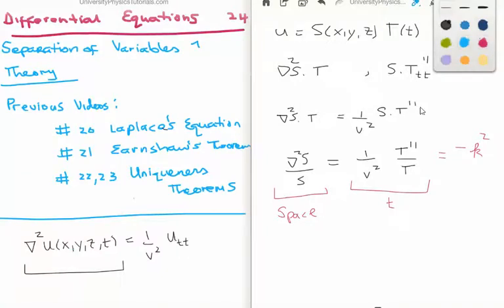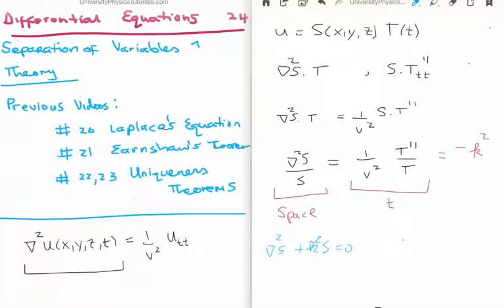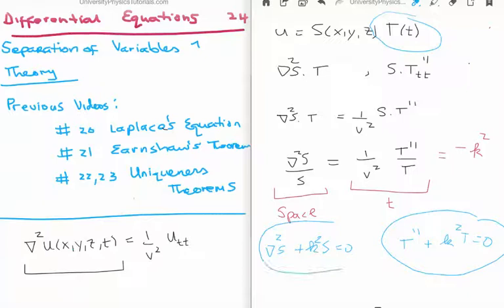So we will get two differential equations as a result. We take the Laplacian of S and get: Laplacian of S plus k squared S equals zero. And for the temporal part: T double prime plus k squared T equals zero. Both of these are homogeneous equations. Notice that the equation on the right is just a function of t, so it will give us the answer for T. But on the left hand side, capital S is a function of x, y, and z, so we still need to apply the method of separation of variables to S.